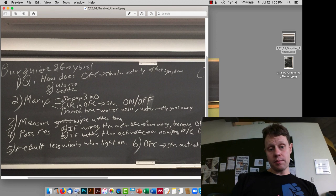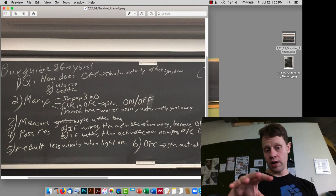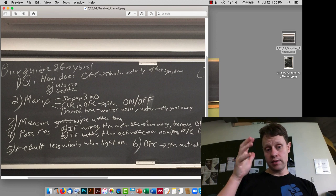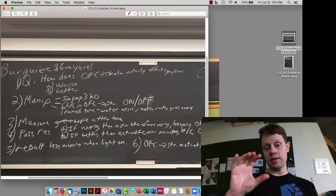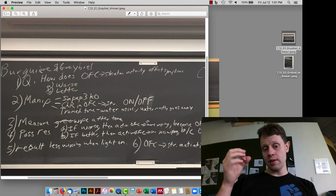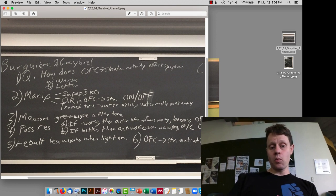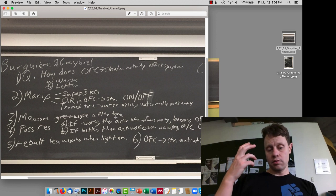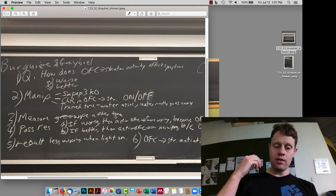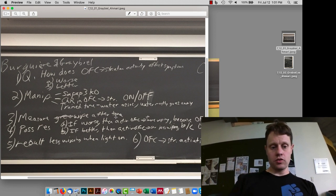And so what they do is they put channelrhodopsin in the orbital frontal cortex and then shine light in the striatum to see what happens. And the main comparison is what happens in these SAPF3 mutant mice when the light is on versus when the light is off. So they're measuring whether they wipe when the tone shows up during times when the light's on and then when the light's off.